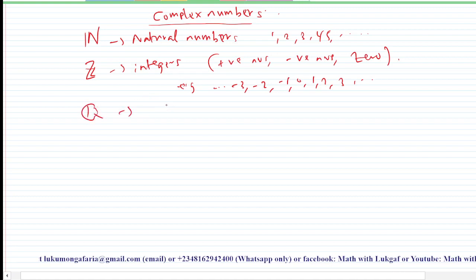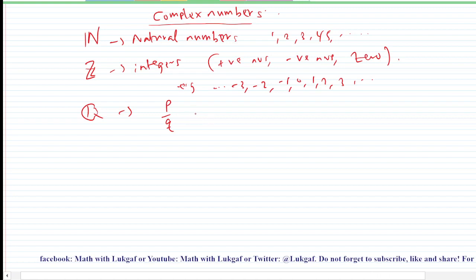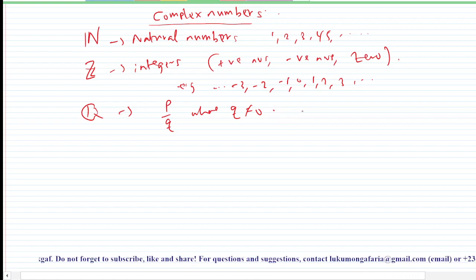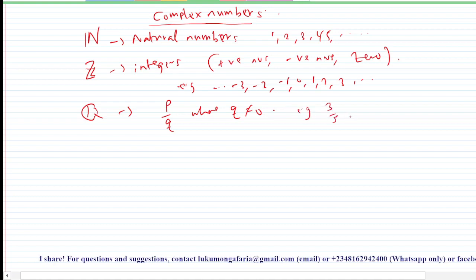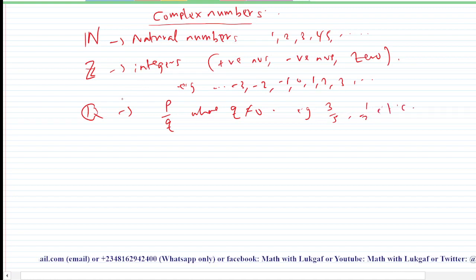Any number that can be expressed as a fraction of two numbers — that is, expressed as p divided by q, where q is not equal to zero — is an example of a rational number. For example, three divided by five, or one divided by two. All these numbers are the set of rational numbers.